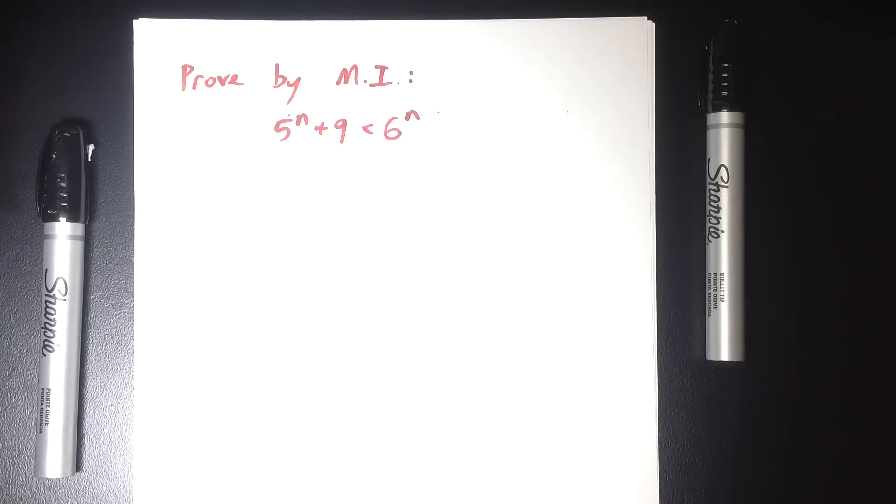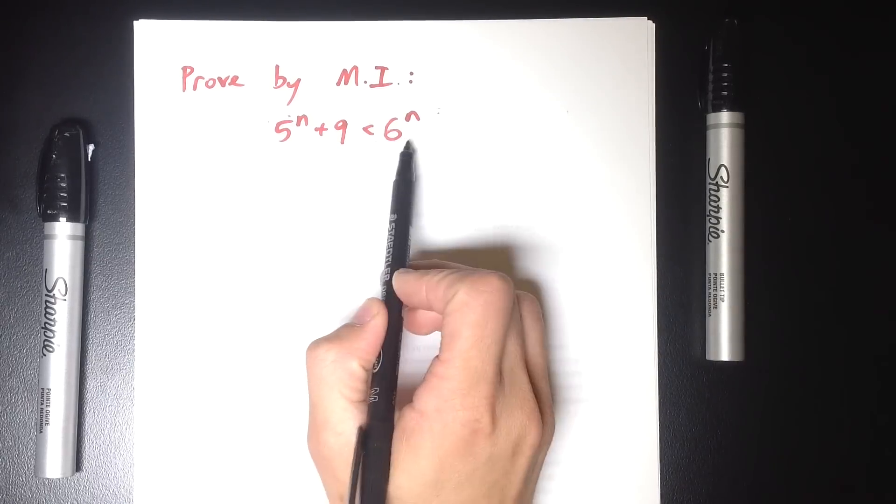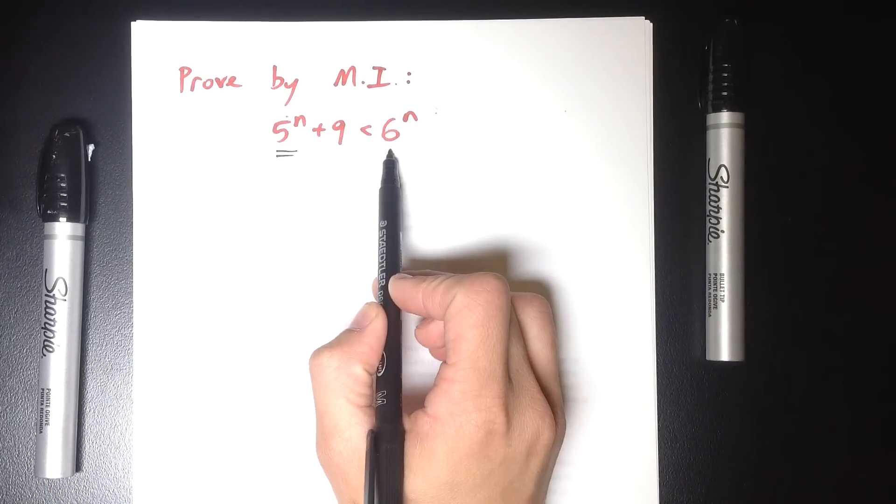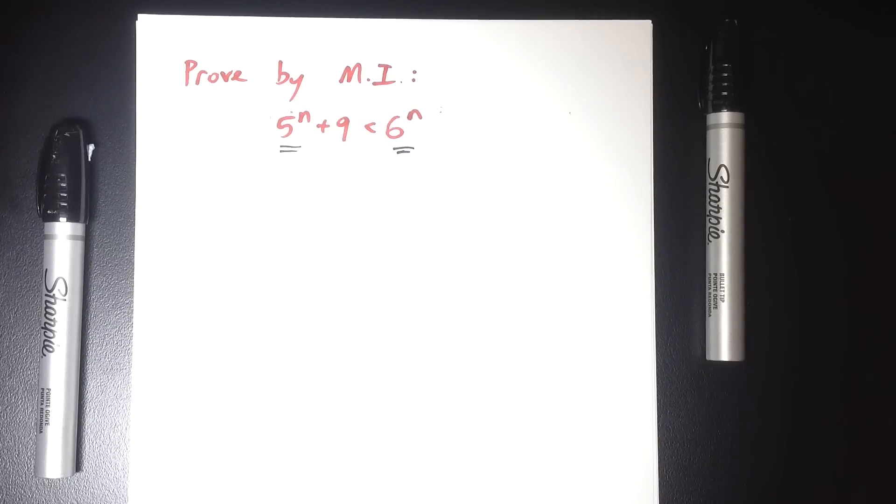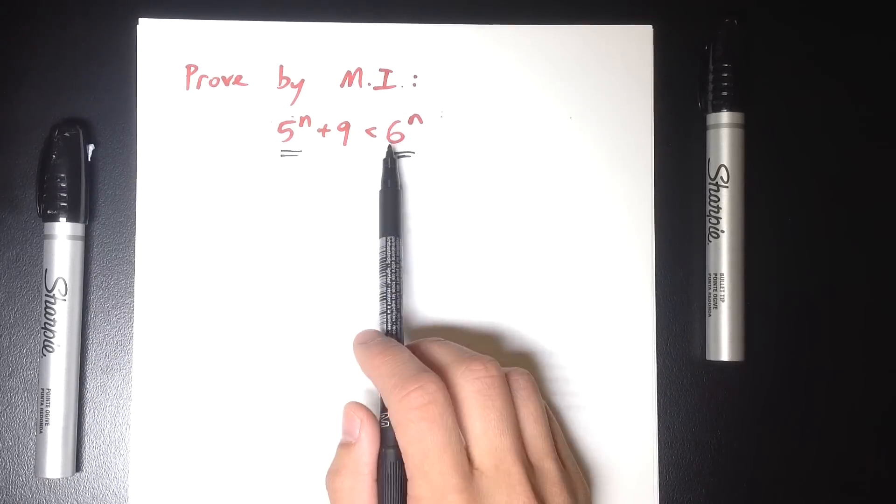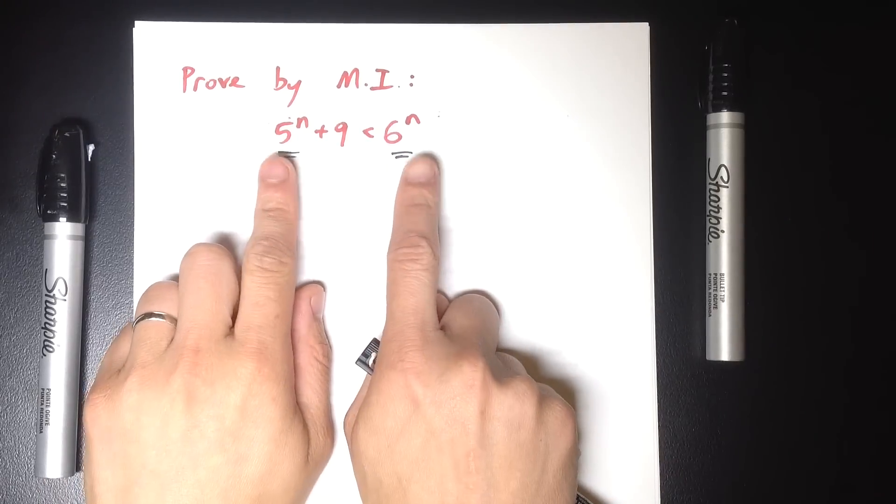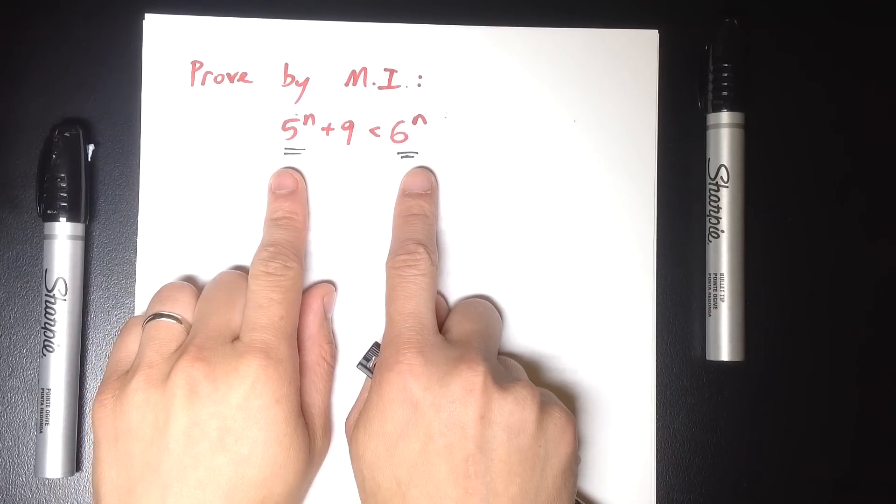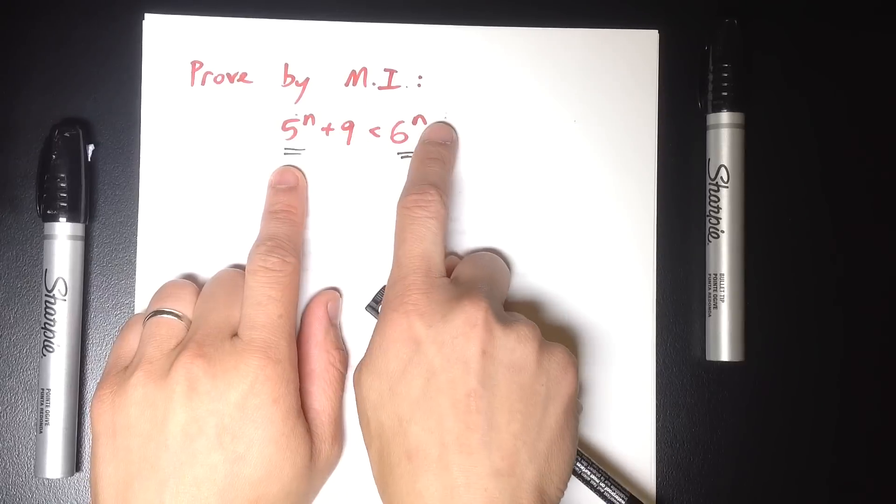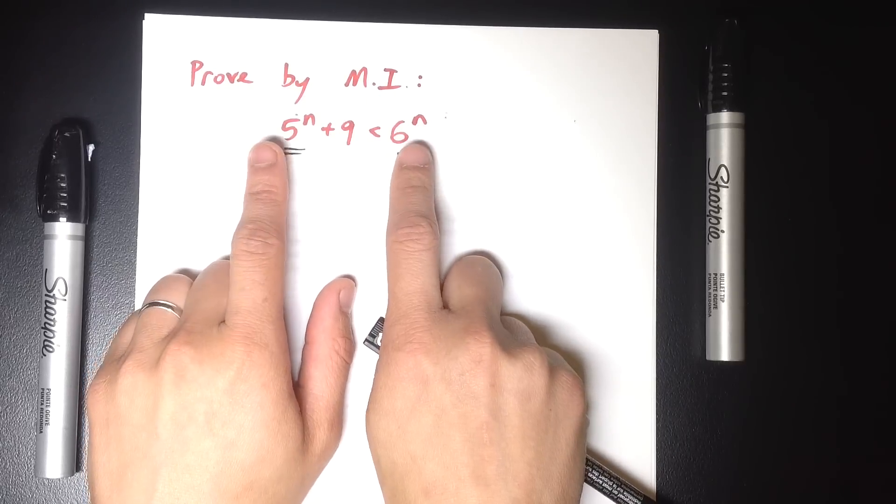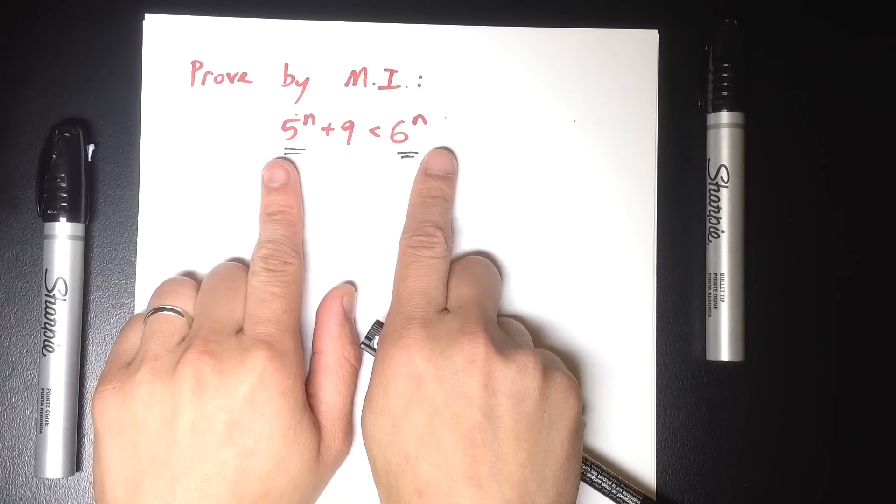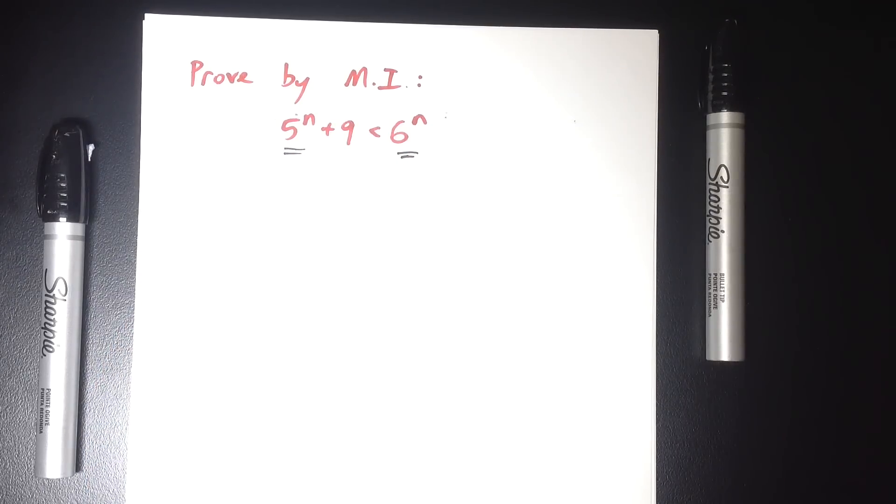Now probably the reason why people have difficulty with it is that when you have a look at it, this 5 to the n and this 6 to the n present some issues. Because if it was say 5 times n and 6 times n, it'd be easy to simplify these two. But because the n is up in the index, this 5 and this 6, because they're different bases, they don't play nicely together. We've got to be a little more tricky with how we prove it.